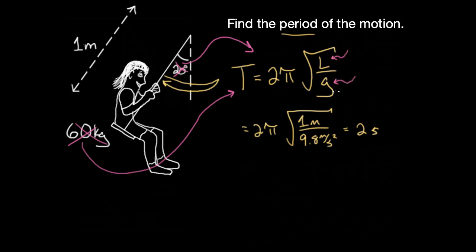One important caveat: a pendulum is technically not a perfect simple harmonic oscillator — it's only approximately one. So this formula is only approximately correct, but for small angles it's almost perfect. At 20 degrees the error is only about 1%. Even at 70 degrees, the error is only around 10%. This is a really good approximation for small angles around 20 to 30 degrees, but as the angle gets bigger the approximation gets worse, and at higher angles it can deviate more significantly from the actual value.